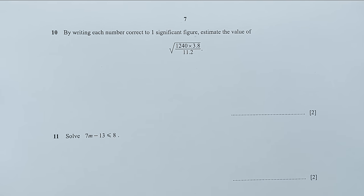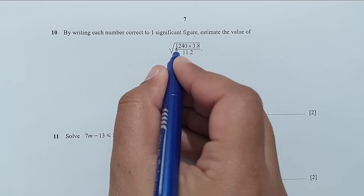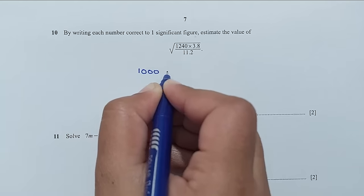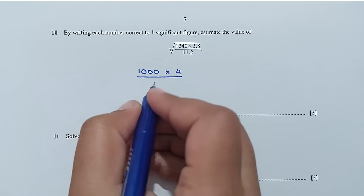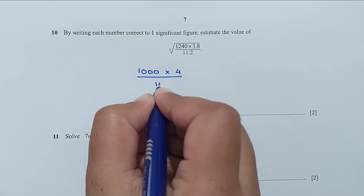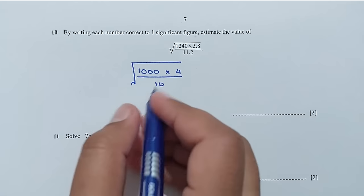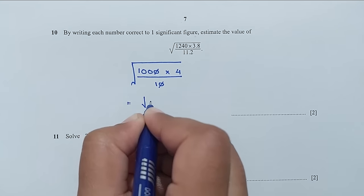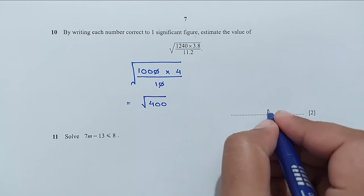Question number 10: by writing each number correct to 1 significant figure, estimate the value. 1240 rounds to 1000, 3.8 rounds to 4, and 11.2 rounds to 10. So we have the square root of 1000 times 4 over 10. The zeros cancel, leaving the square root of 400, which equals 20.